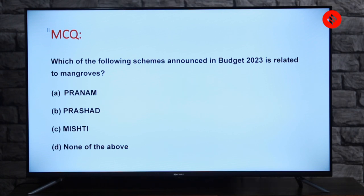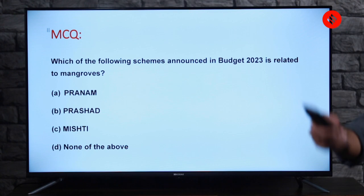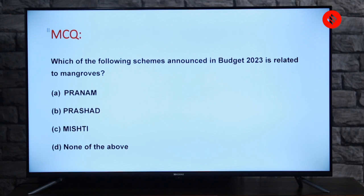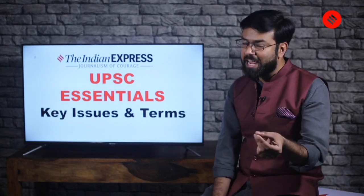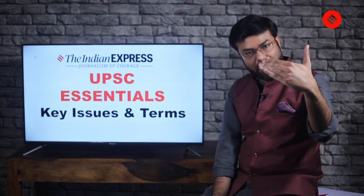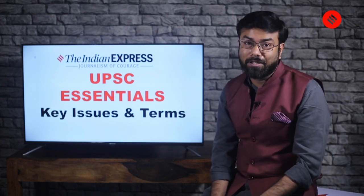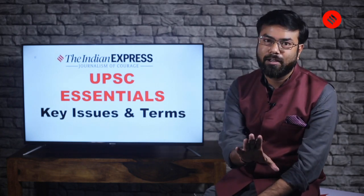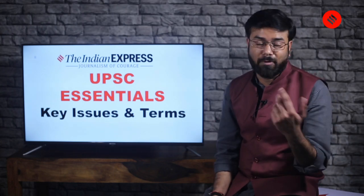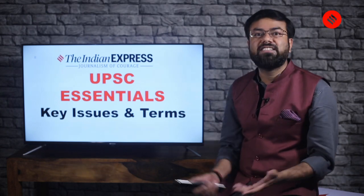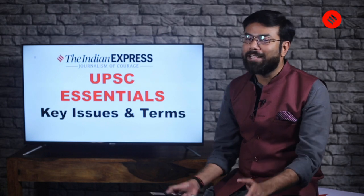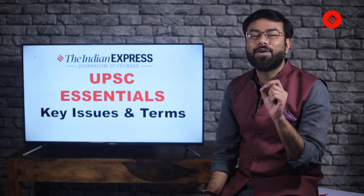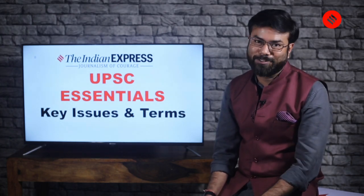The answer to the MCQ: which scheme announced in budget 2023 is related to mangroves? The correct answer is C — MISHTI. So we end today's session having covered priorities three, four, and five. We talked about infrastructure and investment, unleashing the potential, and green growth. We placed MCQs before each priority for revision. The aim of these videos is to make the budget simpler. Think smart, work hard, conquer your goal — and subscribe and like the YouTube channel of the Indian Express.